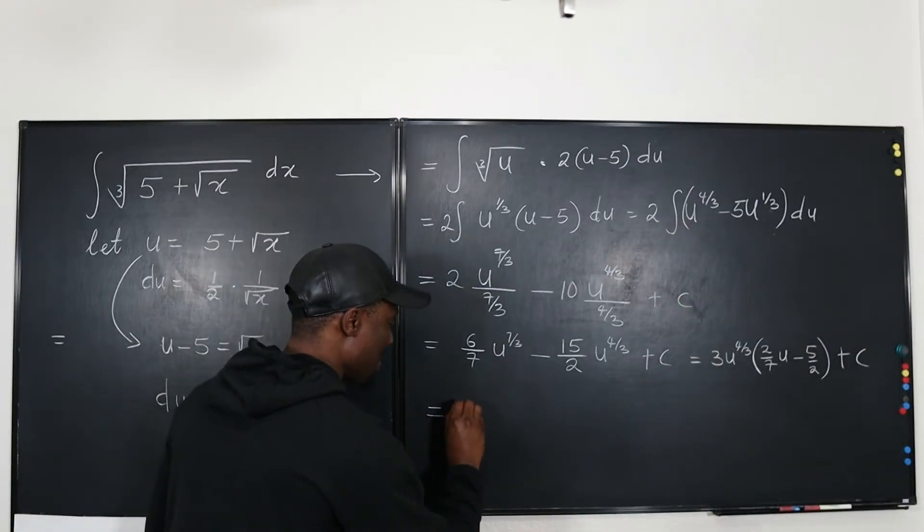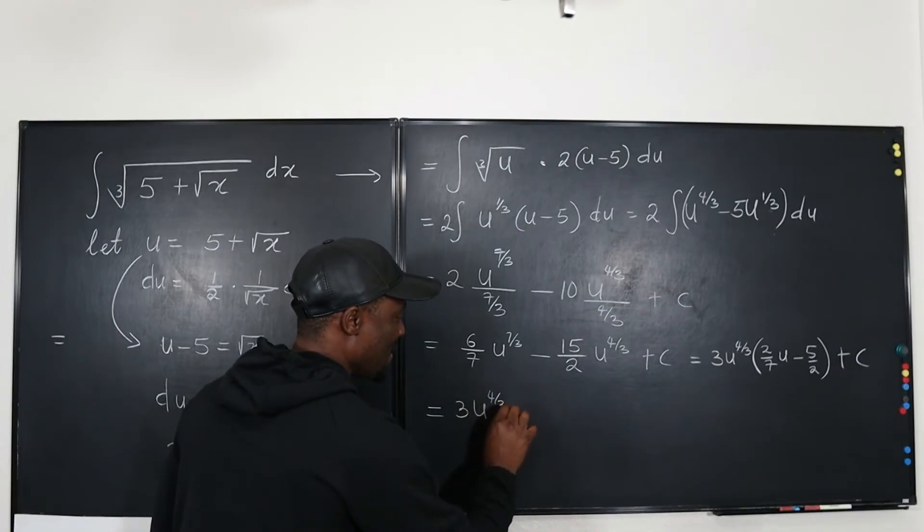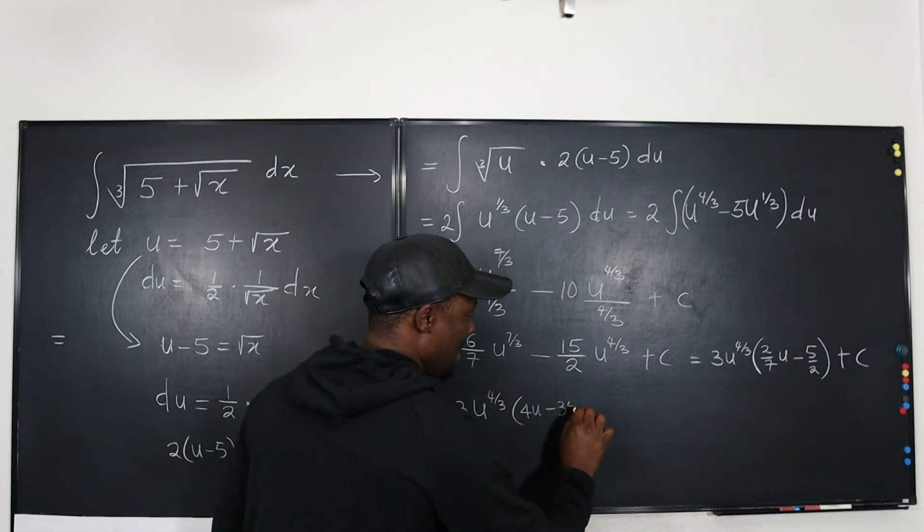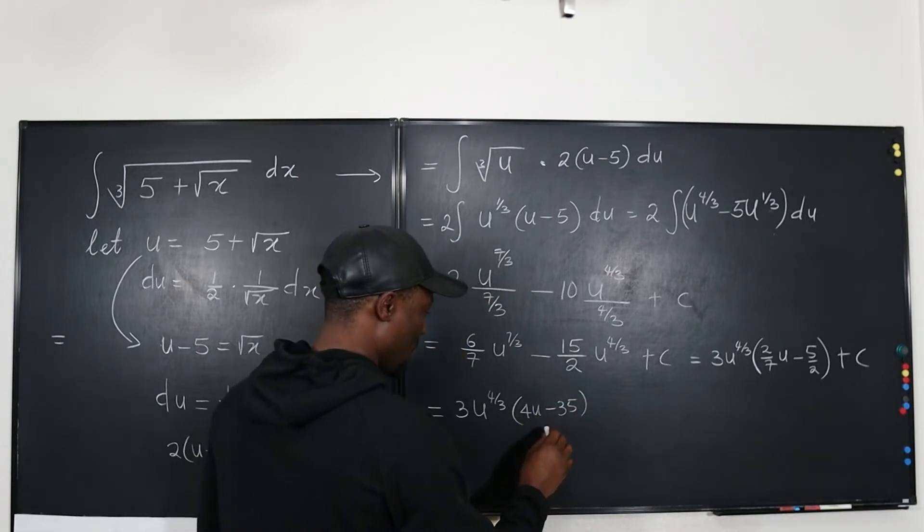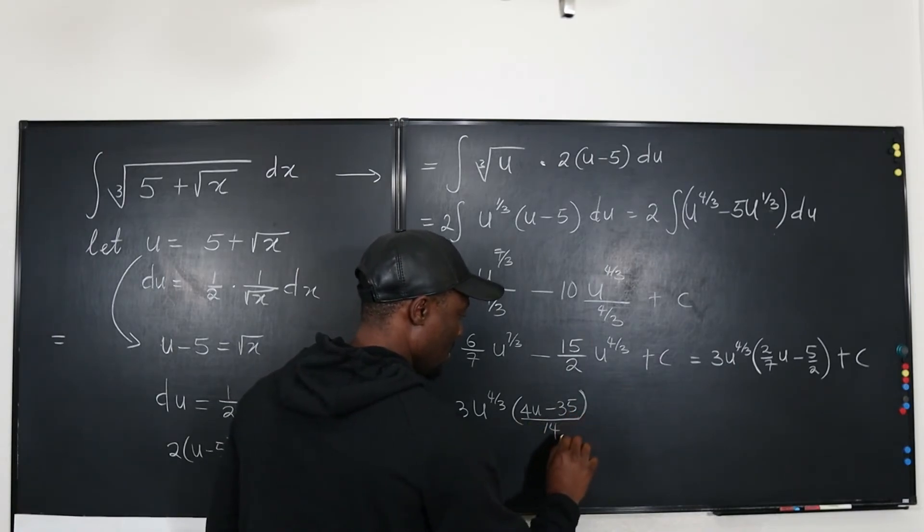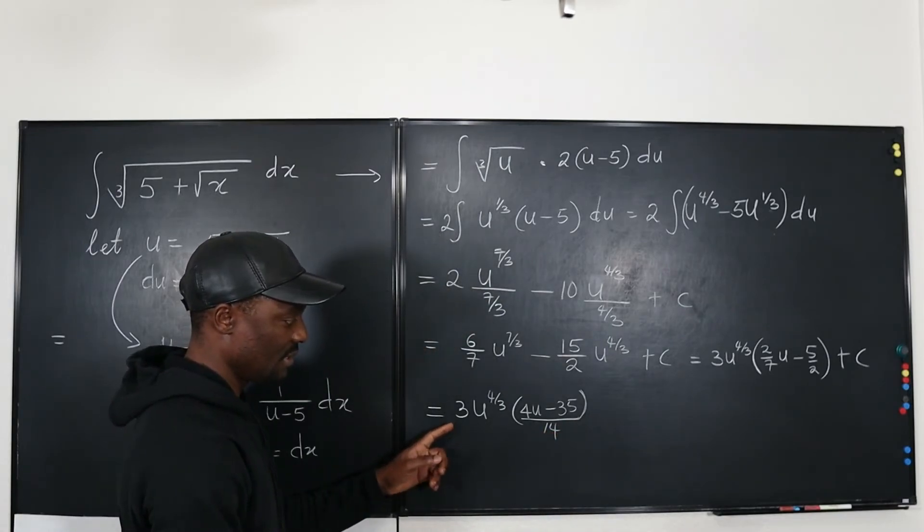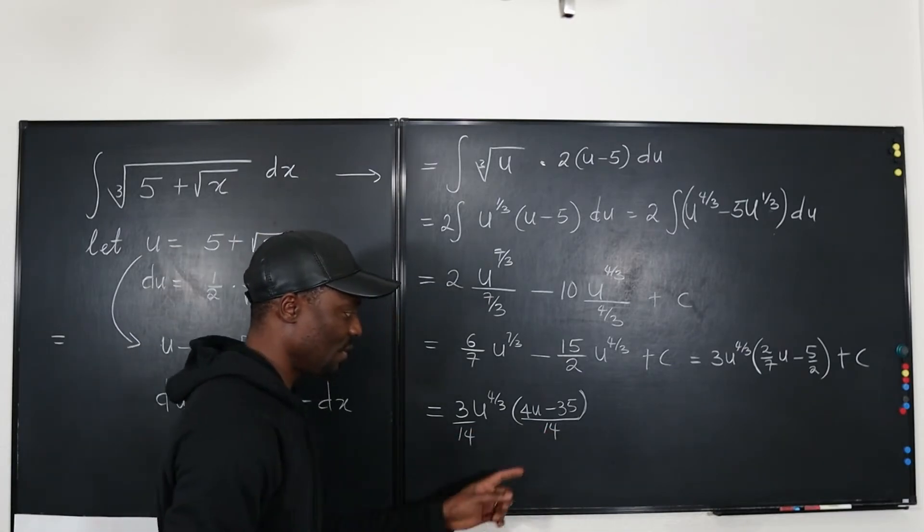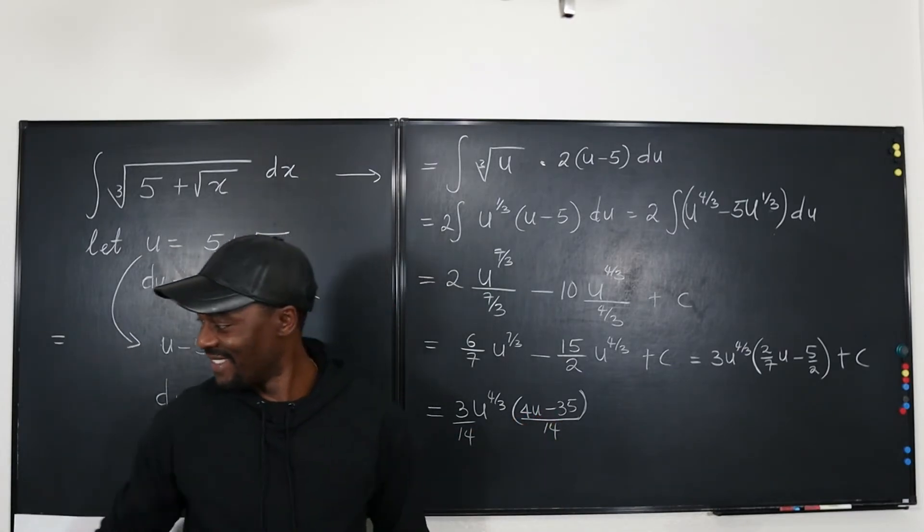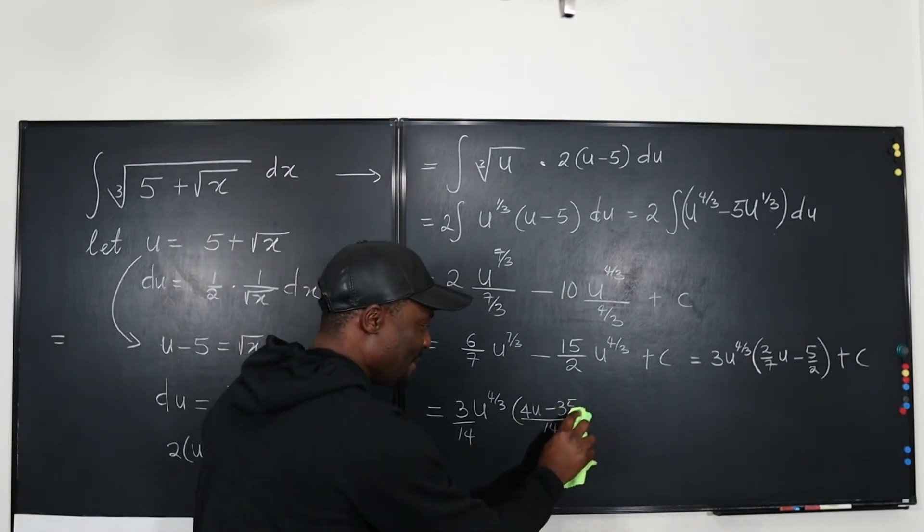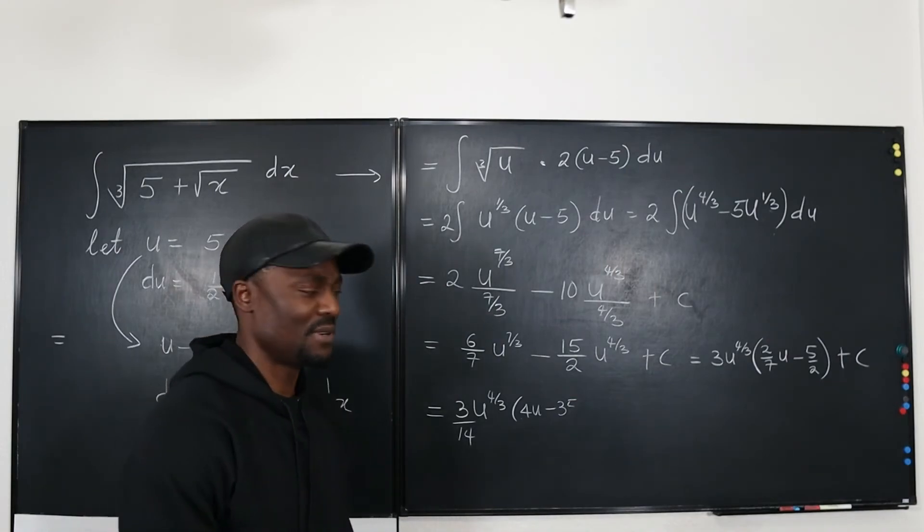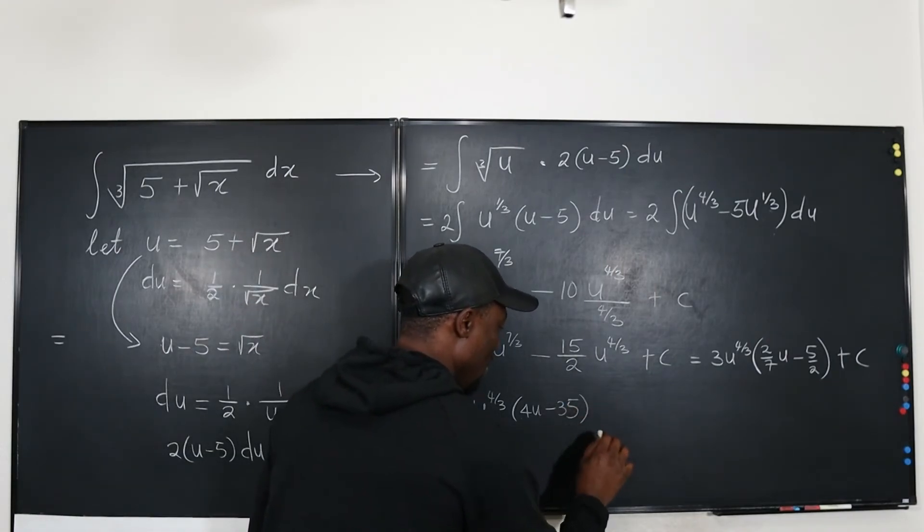So we could have - this is 3u to the 4/3 multiplied by 4u minus 35 over 14. And this 14 can actually come out here since it's multiplication so I can put 14 here. And just leave this as 4u minus 35. We don't have enough space for this. This is cleanup. We're done with the integration. Calculus is done. This is just algebra we're doing. Minus 35.